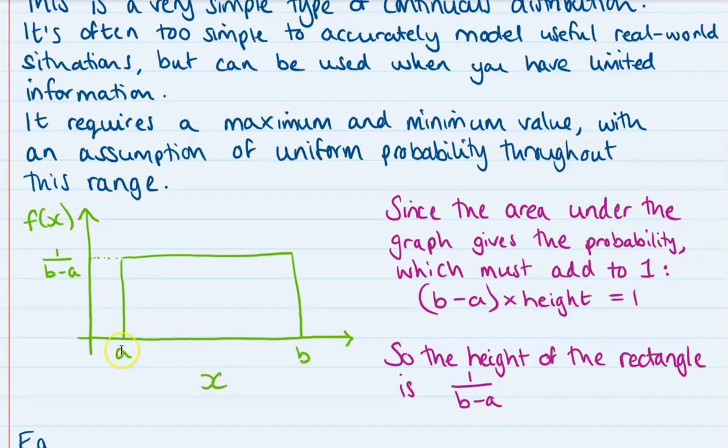So it creates this rectangle shape of distribution. Now since the area under our distributions always gives our probability, then that total area has to make one. Now for it to be one, the height of it must be one divided by the base there, b minus a, so we get one over b minus a.